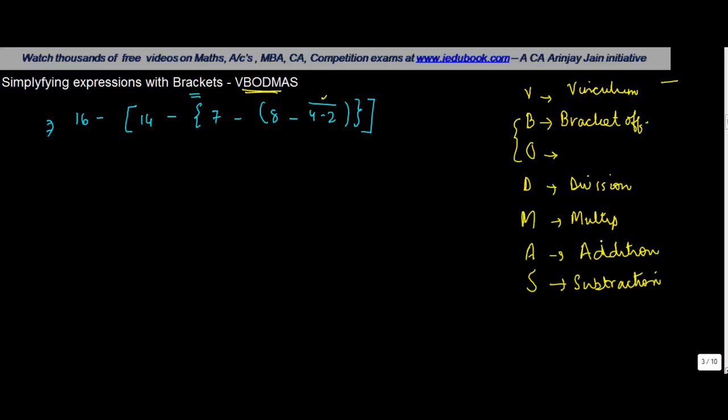If you notice, this is basically the previous two videos I explained where removal of brackets was one thing and application of fundamental mathematical operations was the second. So the first one is vinculum. Where do we have vinculum? Here. So 4 minus 2 will give you 2, minus 8. Then we put in the rest as it is.